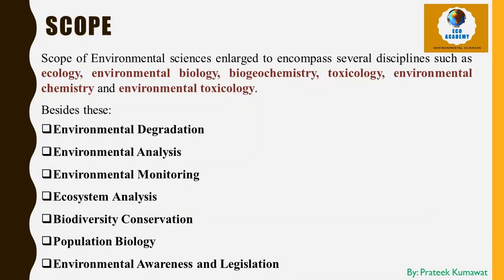Moving to the scope of environmental science: due to rapid industrialization and agricultural development, the scope has enlarged to encompass several disciplines such as ecology, environmental biology, biogeochemistry, toxicology, environmental chemistry, and environmental toxicology. Ecological principles are applied to understand how organisms survive under different combinations of ecological factors. Biogeochemistry deals with the physical, chemical, and biological features of land in relation to the biosphere. Toxicology helps understand the source, fate, and adverse effects of potentially toxic chemicals on the biosphere. Environmental chemistry provides information on the nature of chemicals regarding classification, mechanism of action, and release into the environment. Environmental toxicology deals with the study of toxic physical, chemical, and biological factors that make up our environment.